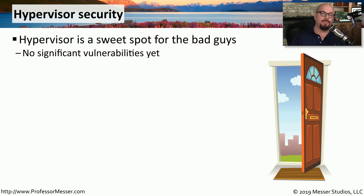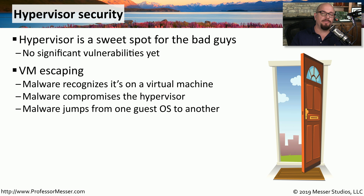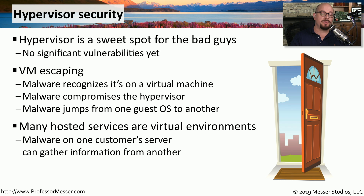The hypervisor is the central management point for all of your virtual machines, which makes it a very attractive target for someone who might want to take advantage of a security flaw. If you can control the hypervisor, you can effectively control all of the virtual machines as well. One type of security vulnerability associated with hypervisors is virtual machine escaping — malware would be loaded on one virtual machine, recognize that it was on a virtual machine, and take advantage of a vulnerability in the hypervisor, effectively hopping through the hypervisor to get to one of the other virtual machines. This can be especially dangerous in shared environments where different customers are using the same hypervisor, allowing someone to escape their server and gain access to someone else's data.